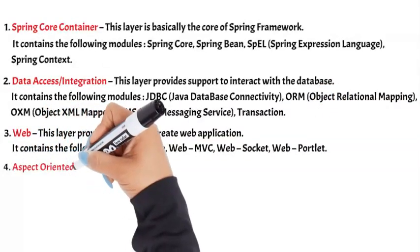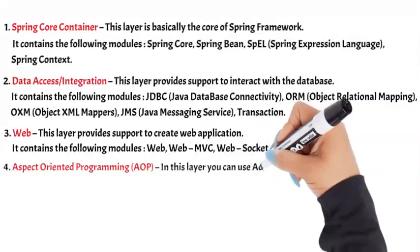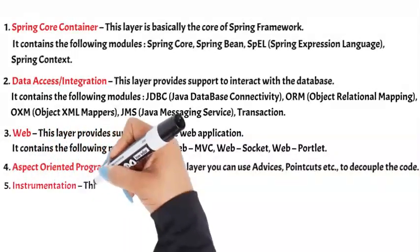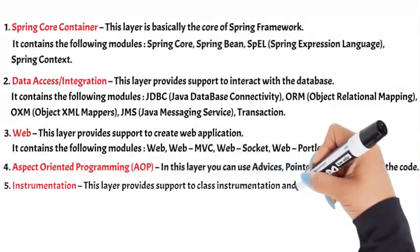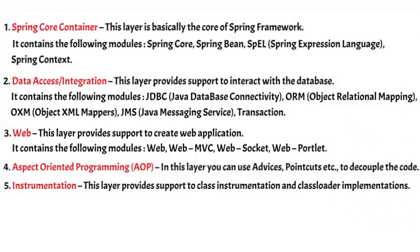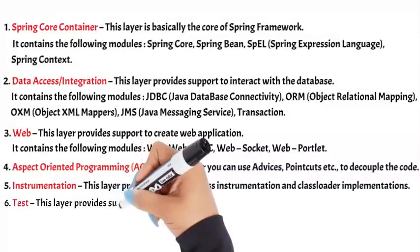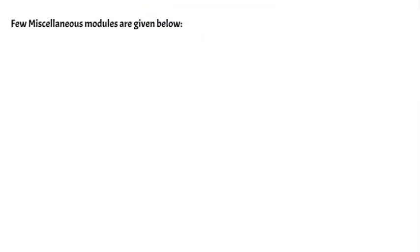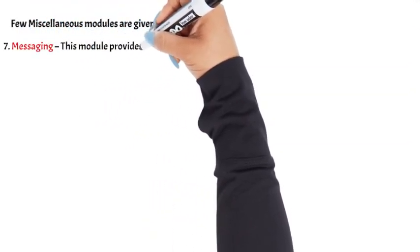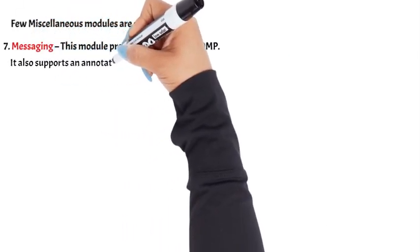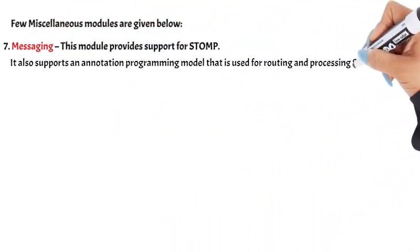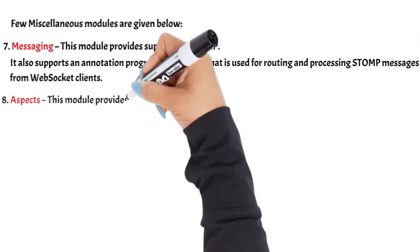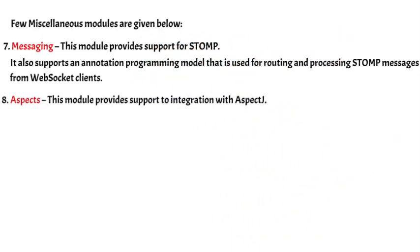4. Aspect-Oriented Programming (AOP): In this layer, you can use advices, pointcuts, etc. to decouple the code. 5. Instrumentation: This layer provides support to class instrumentation and class loader implementations. 6. Test: This layer provides support to testing with JUnit and TestNG. Additional miscellaneous modules include: 7. Messaging: This module provides support for STOMP, and also supports an annotation programming model for routing and processing STOMP messages from WebSocket clients. 8. Aspects: This module provides support to integration with AspectJ.